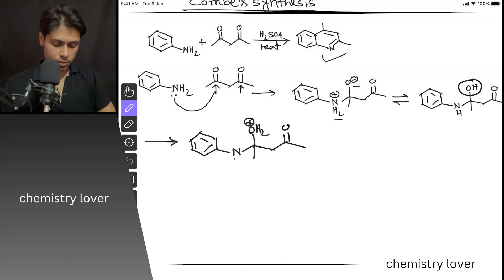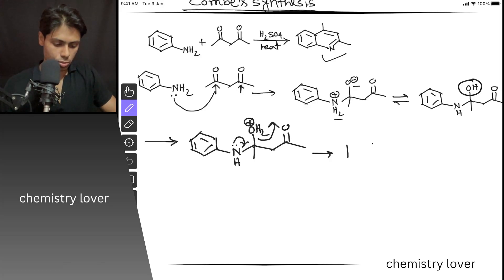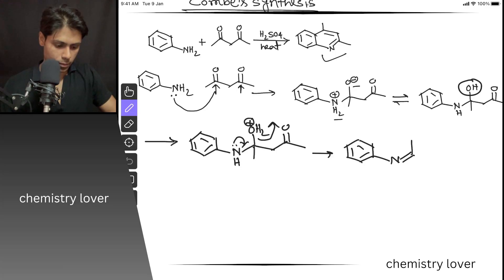Now this nitrogen lone pair will push electrons, and the OH2 plus will leave as water. What you are left with is this intermediate — an N double bond — and this is the iminium ion.